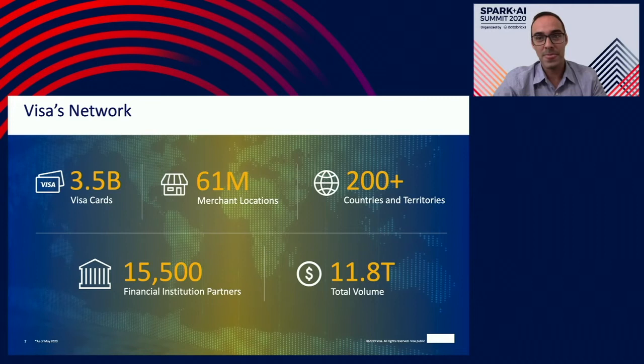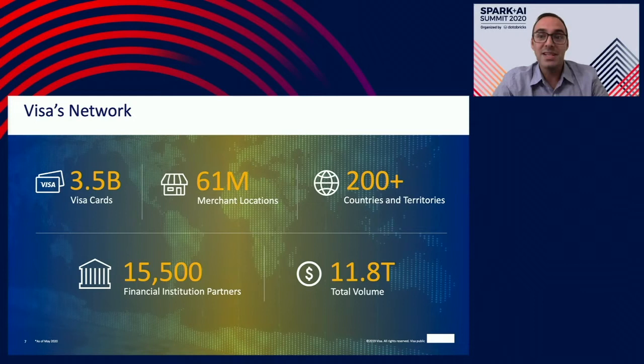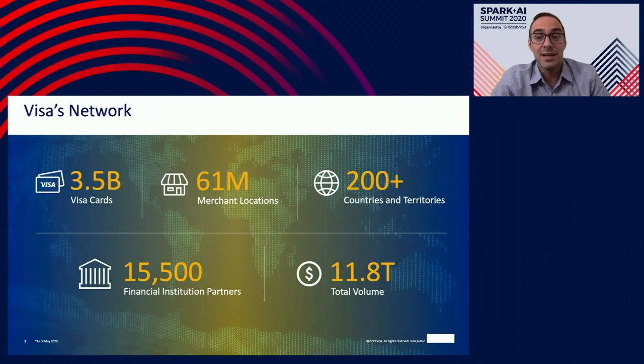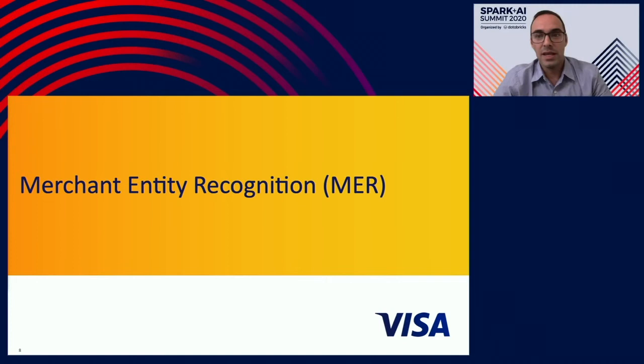Here we see some statistics about our VisaNet. We have 3.5 billion Visa cards and 7.8 billion people — a one-to-two ratio. VisaNet processes 180 billion transactions every year. That gives you an idea of the scale and massiveness of the dataset that we have. This is a big challenge as well as an opportunity for data scientists like us. And with that, we want to talk about our topic for today, which is merchant entity recognition, in short, MER.